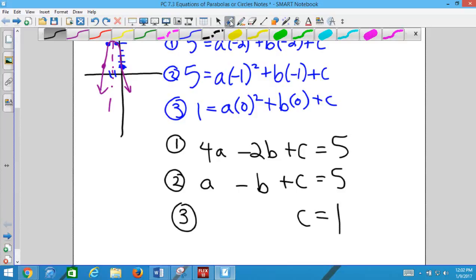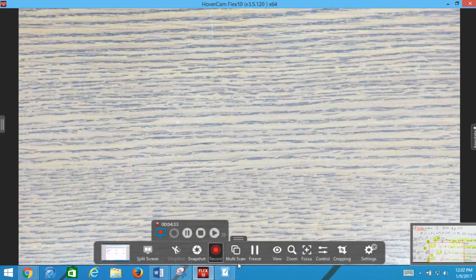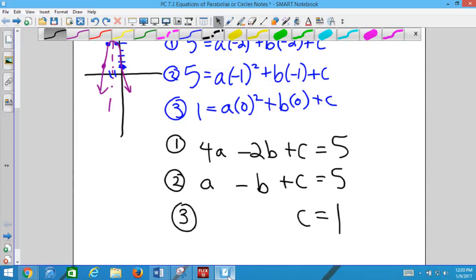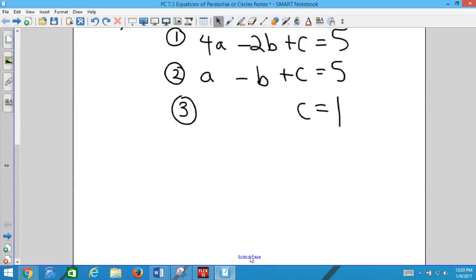So we have three equations. We have three variables. You need to solve for those variables. But this one works out kind of nice because c is 1. I already know what c is. What should I do then? Plug it in.